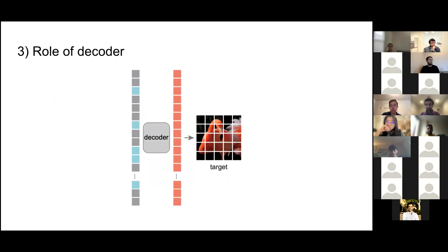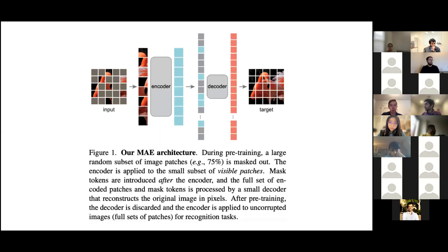The last difference is in the role of the decoder. The output is of lower semantic value, particularly working with pixels. So the decoder design will play a key role in determining the semantic level of the learned latent representations.